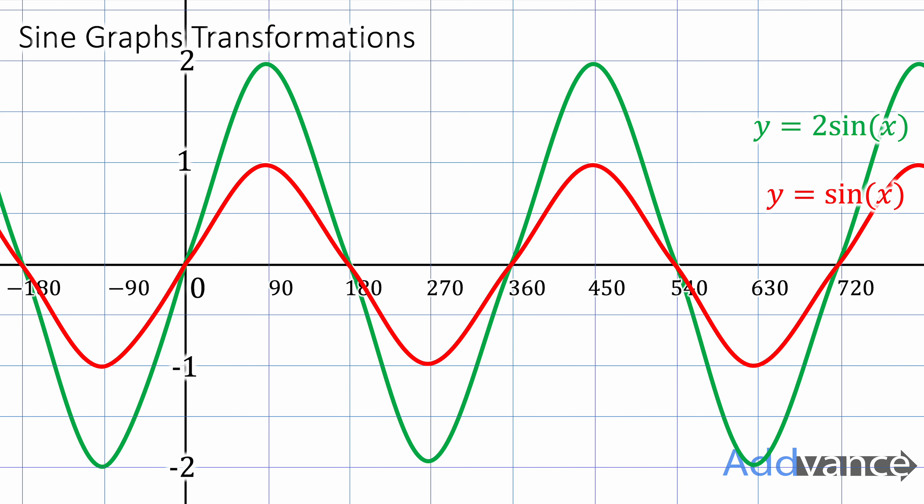Now we can multiply the sine graph like this so we can do 2 sin of x and that stretches the graph up and down and now it will go from 2 units all the way from a maximum of 2 all the way down to a minimum of minus 2.